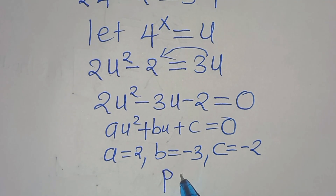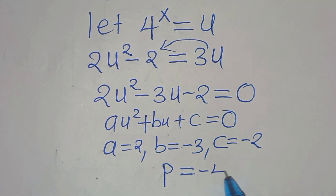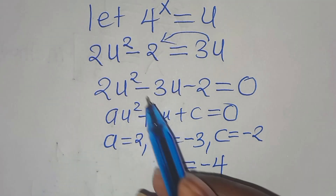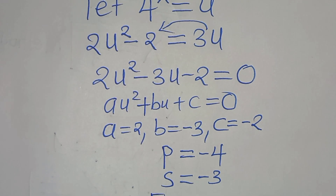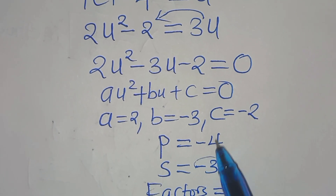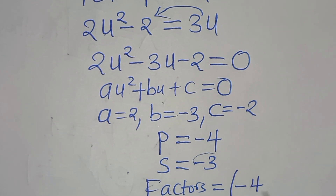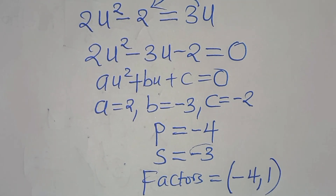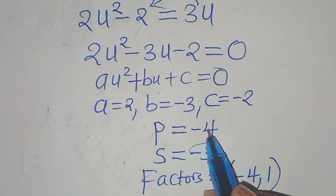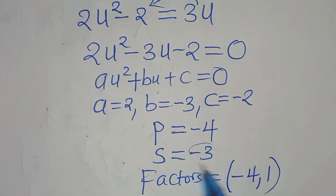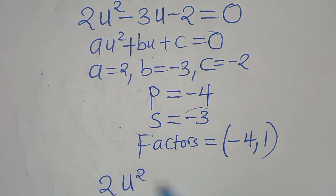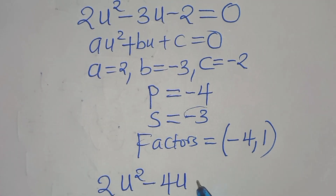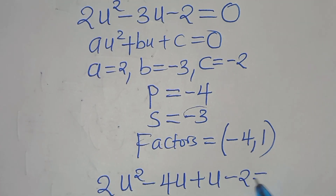The product is 2 times minus 2, which is minus 4, and the sum is minus 3. We need to identify two factors such that when we add them we get minus 3, and when we multiply them we get minus 4. The two factors are minus 4 and 1: minus 4 times 1 equals minus 4, and minus 4 plus 1 equals minus 3. So we substitute to get 2u squared subtract 4u, plus u subtract 2, equals 0.